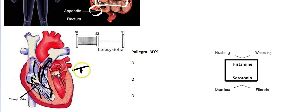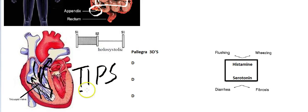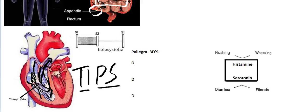How I remember that is by the mnemonic TIPS: Tricuspid Insufficiency, Pulmonary Stenosis. Pulmonary valve stenosis is going to cause pulling of blood back into the right side of the heart, causing your right side to go into hypertrophy. Now the interesting part is that it does not affect the left side of the heart, because the lung does have monoamine oxidase — which is where the conversion happens.